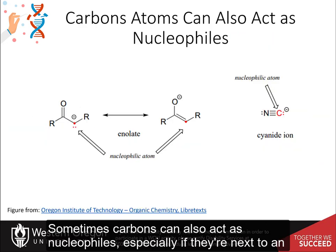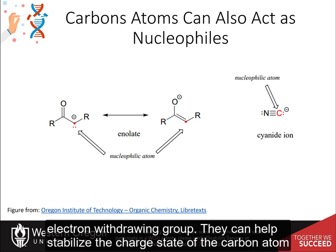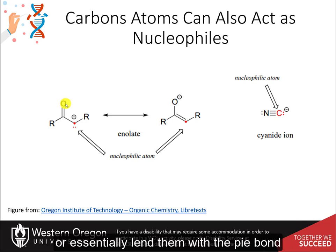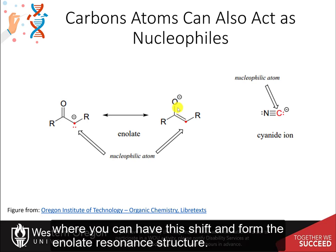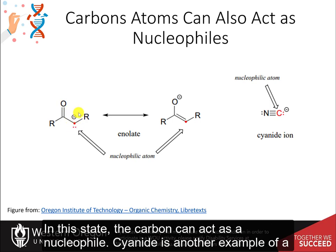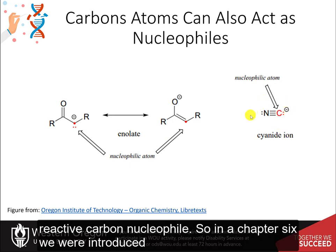Carbons can also act as nucleophiles, especially if they're next to an electron-withdrawing group, which can help stabilize the charge state of the carbon atom. Through a shift involving the pi bond, you can form the enolate resonance structure, and in this state the carbon can act as a nucleophile. Cyanide is another example of a reactive carbon nucleophile.